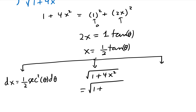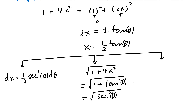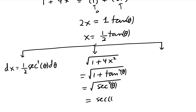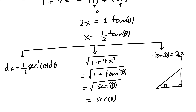Now rewrite the radical: 1+4x² = 1+tan²(θ) = sec²(θ), so √(1+4x²) = sec(θ). Solving for tan(θ) = 2x, we construct the right triangle with opposite = 2x, adjacent = 1, and hypotenuse = √(1+4x²). Also θ = tan⁻¹(2x).